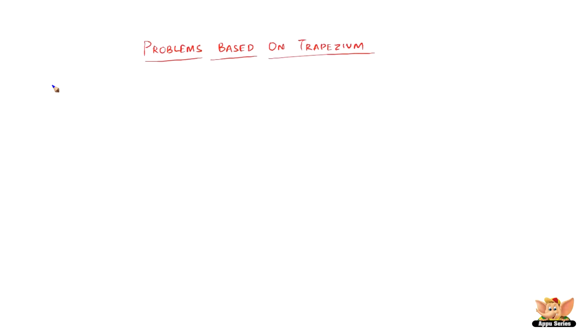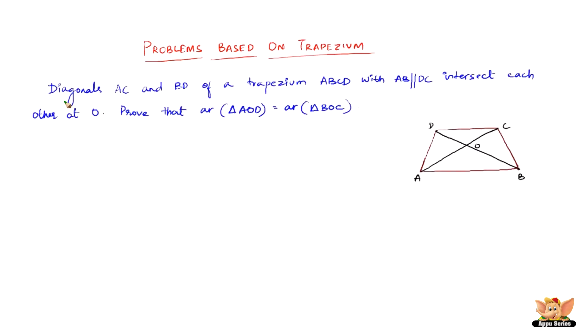In this video, let us solve some problems based on trapezium. The question goes like this: diagonals AC and BD of trapezium ABCD, with AB being parallel to DC, intersect each other at O. Prove that the area of triangle AOD and the area of triangle BOC are equal.